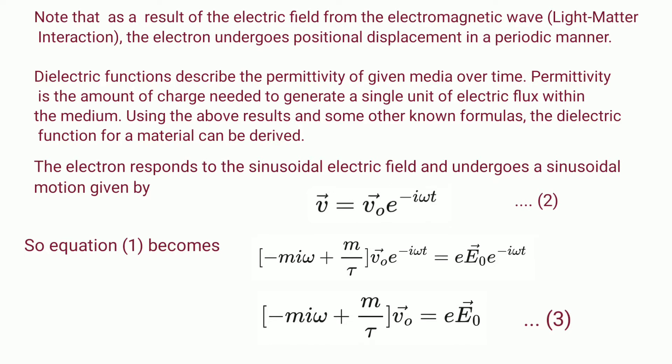Dielectric function describes the permittivity of given media over time. Permittivity is the amount of charge needed to generate a single unit of electric flux within the medium. Using the above results and some other known formulas, the dielectric function for the material can be derived. The electric field caused by the electromagnetic wave causes the electron to respond and undergo a sinusoidal motion given by v = v₀e^(-iωt).